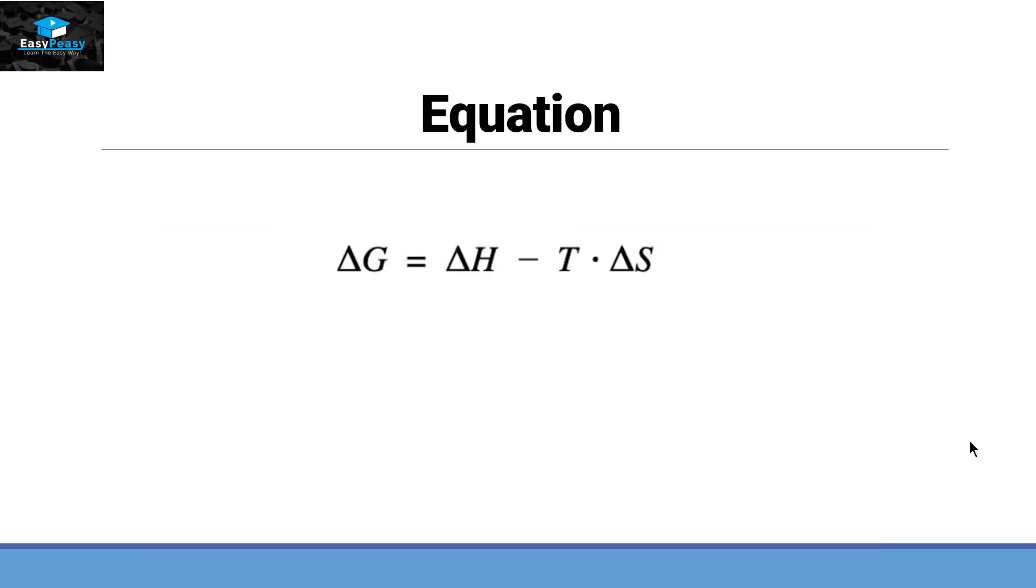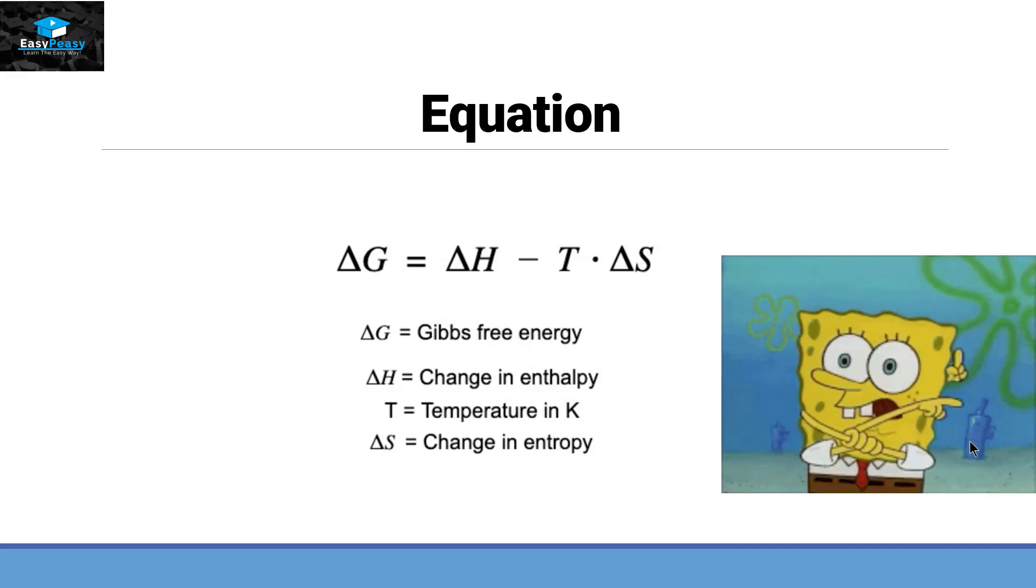The equation of Gibbs free energy is ΔG = ΔH - T·ΔS, in which ΔG is Gibbs free energy, ΔH is the change in enthalpy, T is the temperature, and ΔS is the change in entropy. Now if you are a biologist, you might get confused with the terminology called enthalpy and entropy. So let's define them first and then we will move forward.